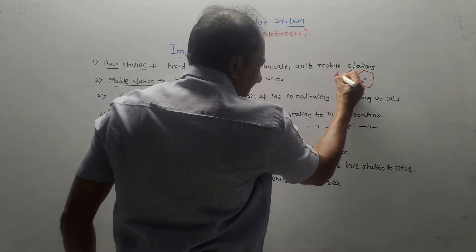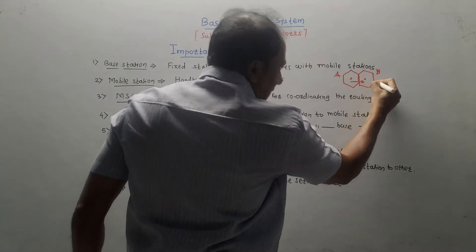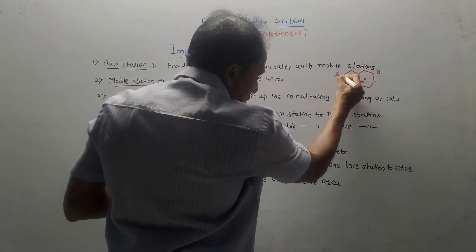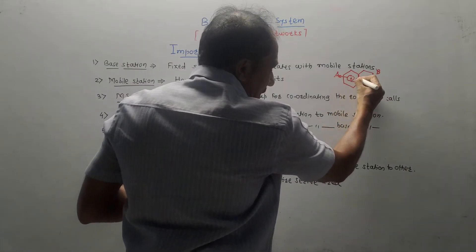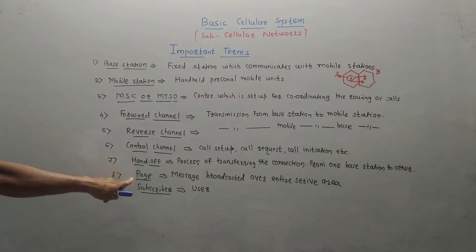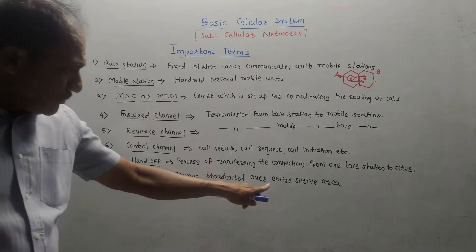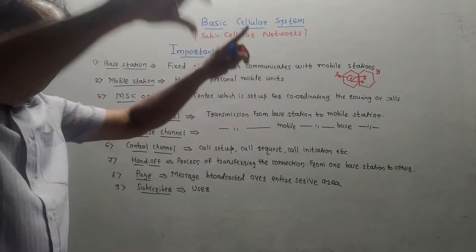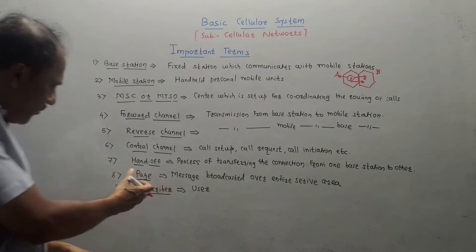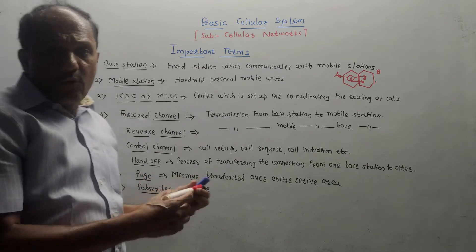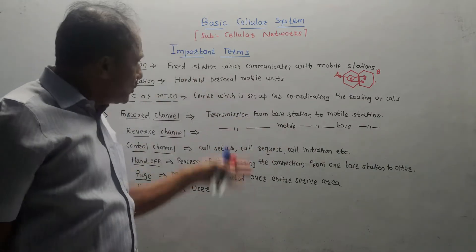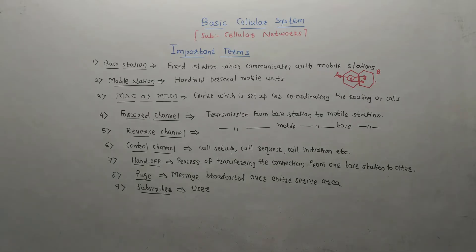If a person is moving from one cell to another, the communication continues without the user's knowledge — the connection is transferred from the base station of cell A to the base station of cell B. That is called the hand-off mechanism — it is the process of transferring the connection from one base station to another. Next, if a message is broadcasted over the entire service area, that is referred to as a page. A subscriber is a user who is using a particular cellular network service.